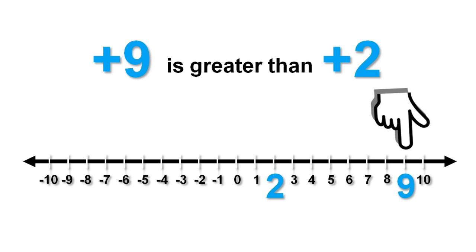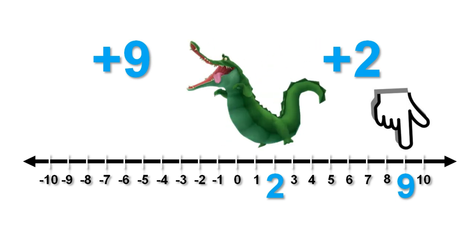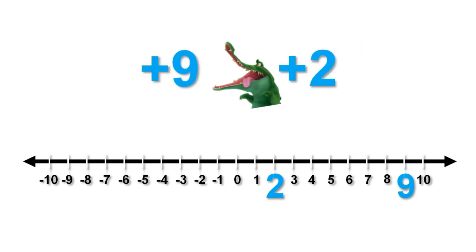There is a special way we write this in maths. To help you remember this, we are going to use a greedy crocodile. The greedy crocodile always wants to eat the bigger number. He opens his jaws wide to eat it, and the shape of his jaws is the same as the symbol we use. This symbol is called an inequality sign. This mathematical expression means that positive 9 is greater than positive 2.